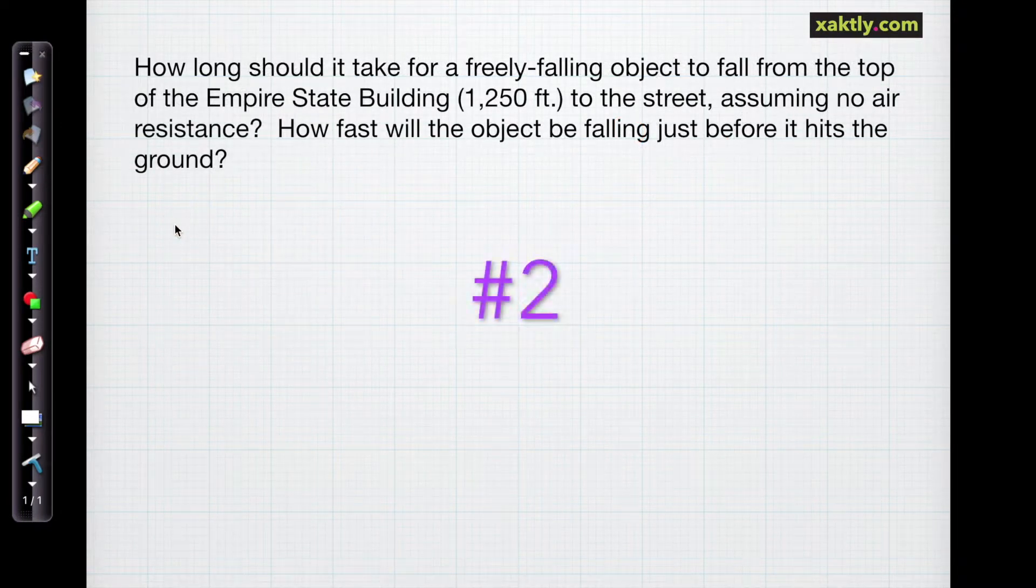Okay, for our second example, let's ask how long should it take for a freely falling object to fall from the top of the Empire State Building, which is 1,250 feet high, to the street, assuming that there's no air resistance. And the second question I want to ask is how fast will it be falling just before it hits the ground?